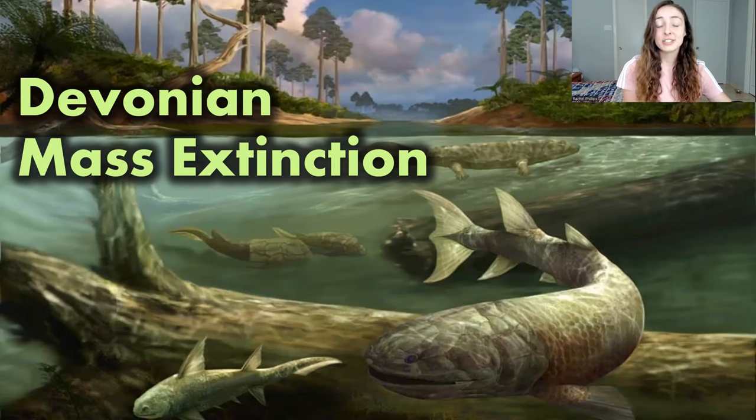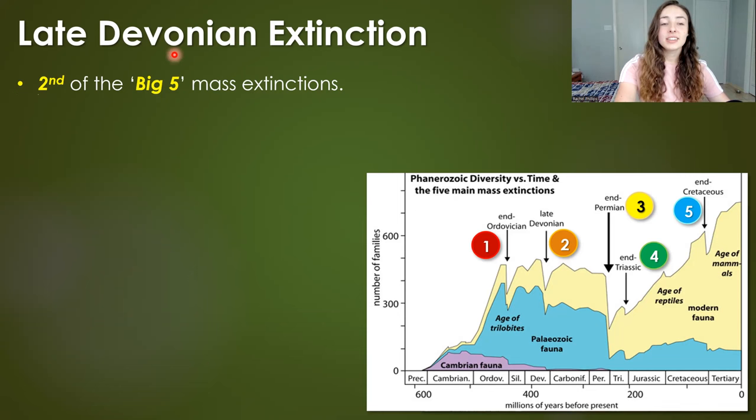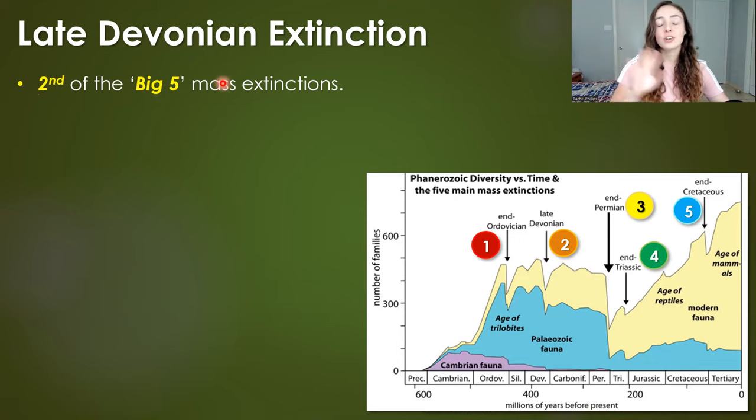We all know that an asteroid impact led to the demise of the dinosaurs, but there have been other mass extinctions throughout Earth's history that are much more mysterious in terms of what initially caused them. One such extinction event is the Devonian mass extinction.